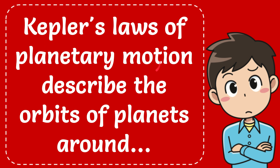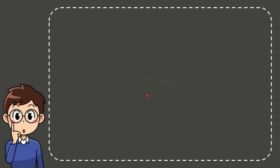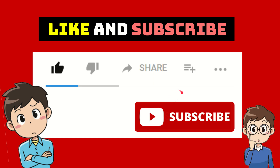In this video I'm going to give you the answer to this question: Kepler's laws of planetary motion describe the orbits of planets around what? The answer to the question is the Sun.